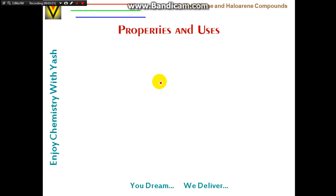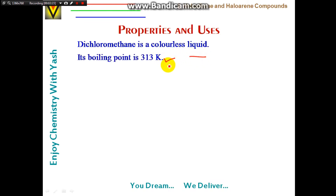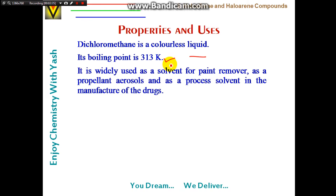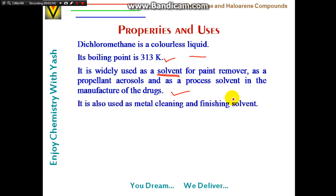Dichloromethane is a colorless liquid with a boiling point of 313 K (about 40°C), a very low boiling point. It is widely used as a solvent — for paint remover, as a propellant in aerosols, and as a process solvent in the manufacture of drugs in pharmaceutical industries.